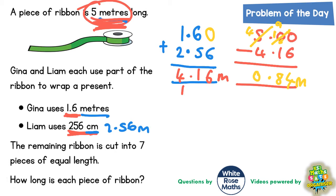This would need to be divided by 7. The remaining ribbon, this 0.84, is being cut or divided by 7. So we need to do 0.84 divided by 7. 7 into 0 won't go, 7 into 8 is once remainder 1, that 1 makes 14 and 7 into 14 goes twice. Put the decimal point in and we've got 0.12 metres.